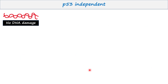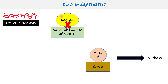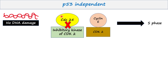P53-independent pathway: If there is no DNA damage, CDC25 protein remains activated in the cell and it degrades the inhibitory kinase from CDK2. Hence, Cyclin E and CDK2 are free to bind each other and the cycle moves forward.